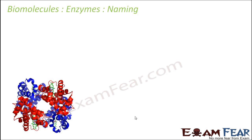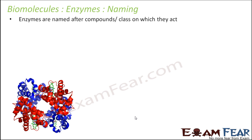Now let us look at the naming of enzymes — how are enzymes named. That is also an important topic to be covered. When you talk about their names, they are named after the compounds or class on which they act. When I say compounds or class, I am talking about the reactants — the type of reactants on which they act.